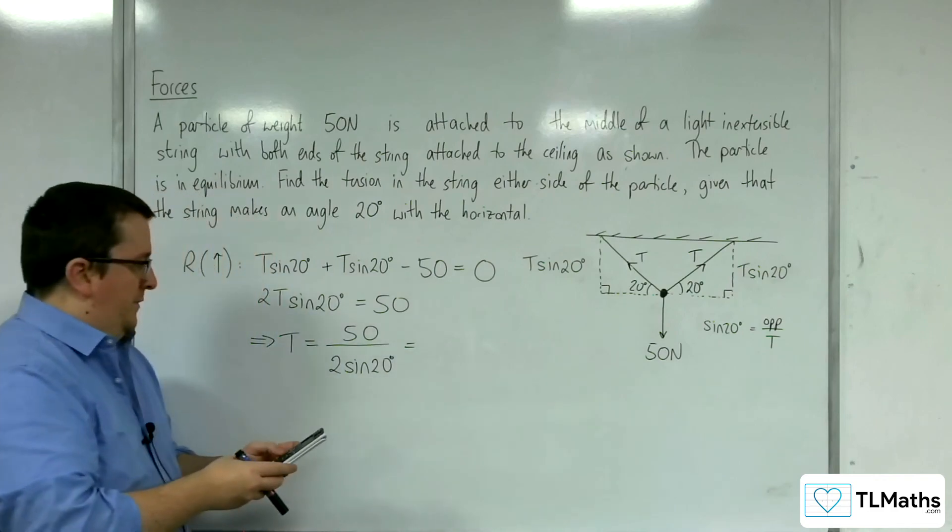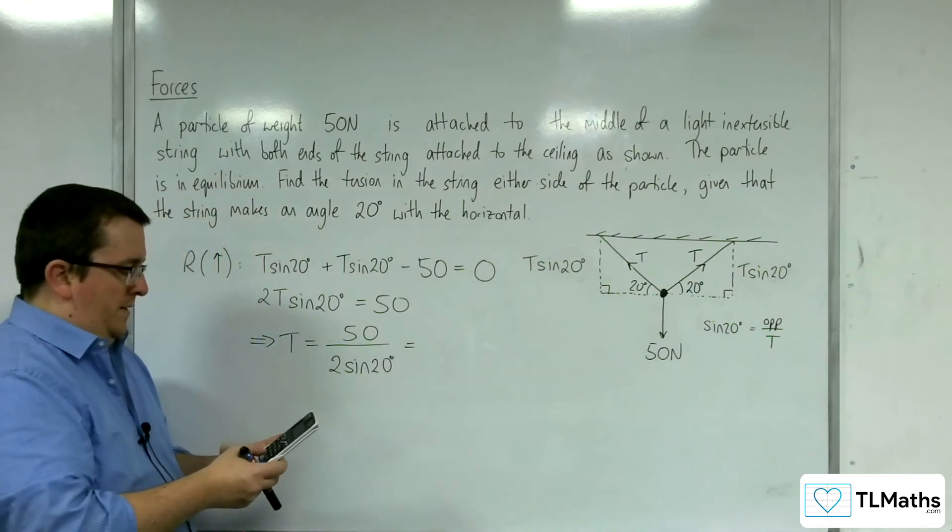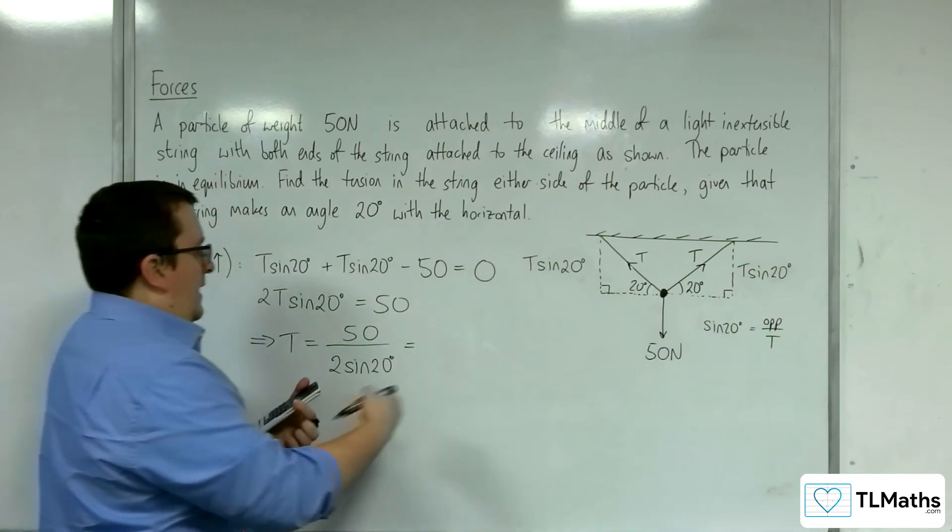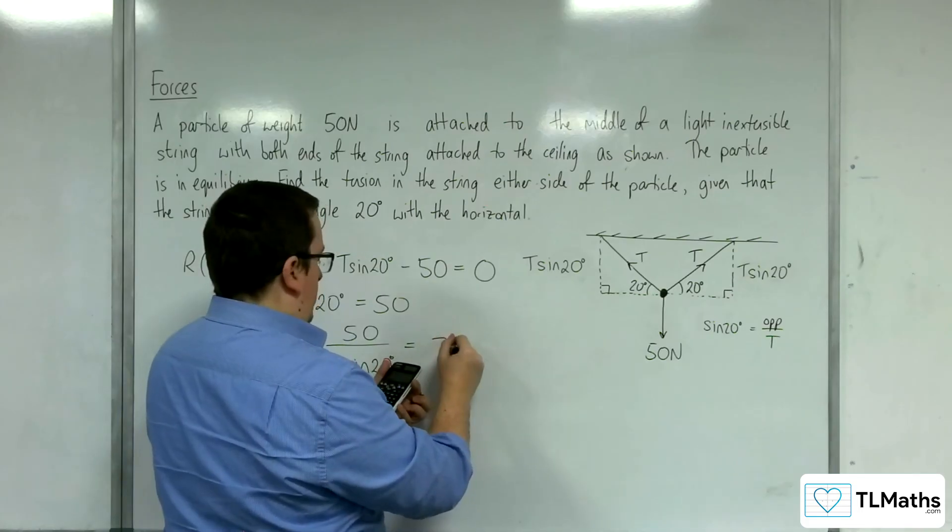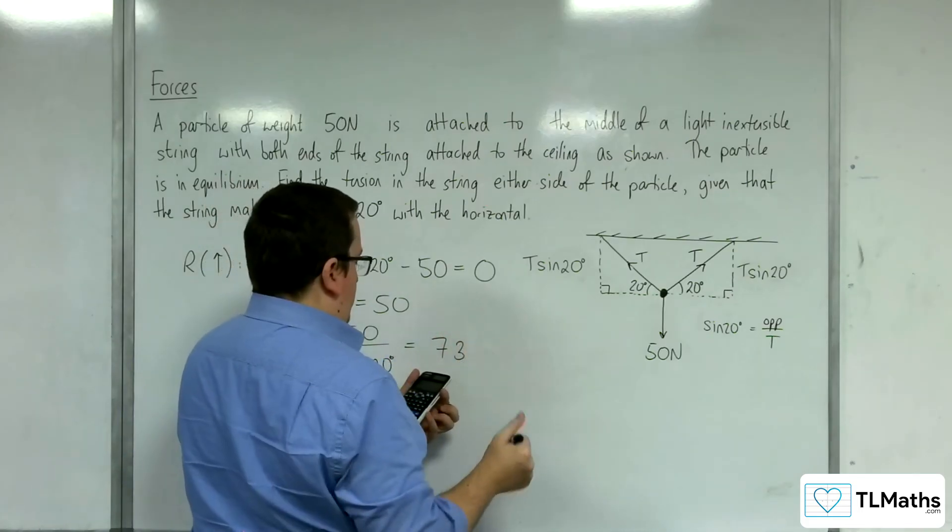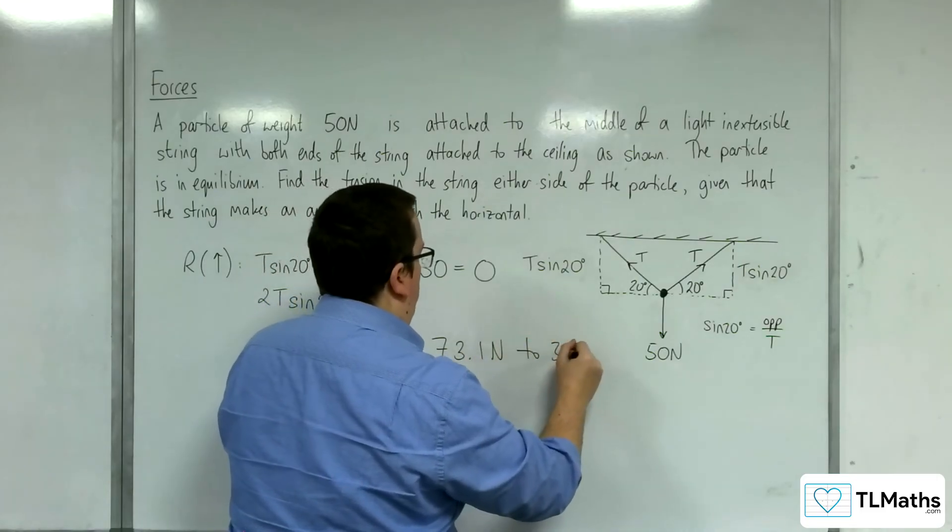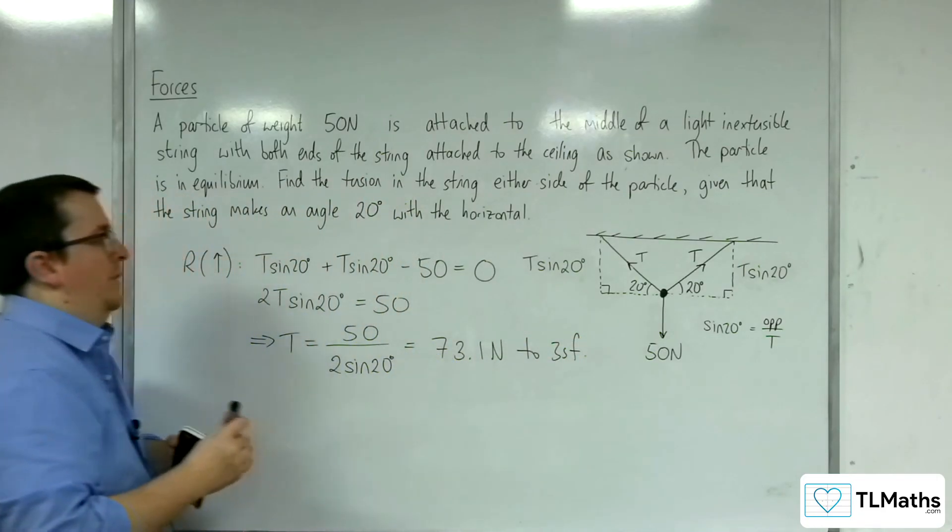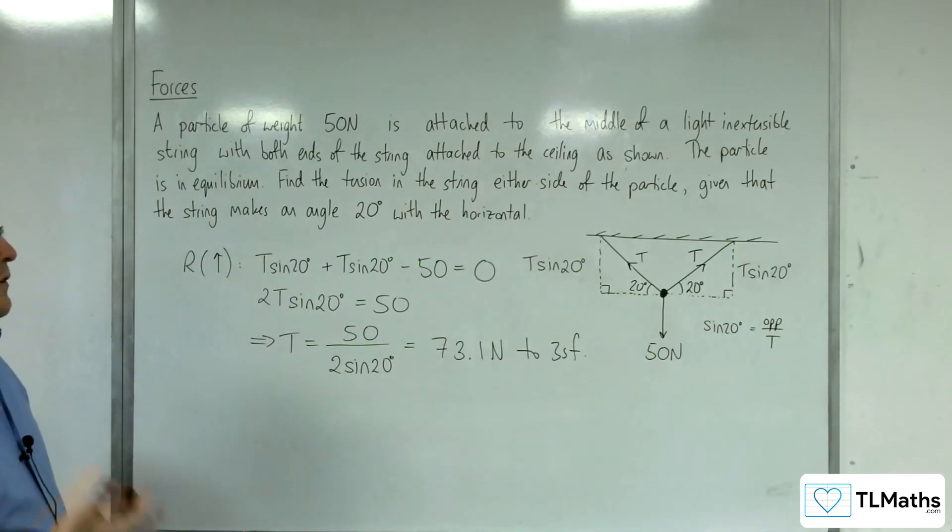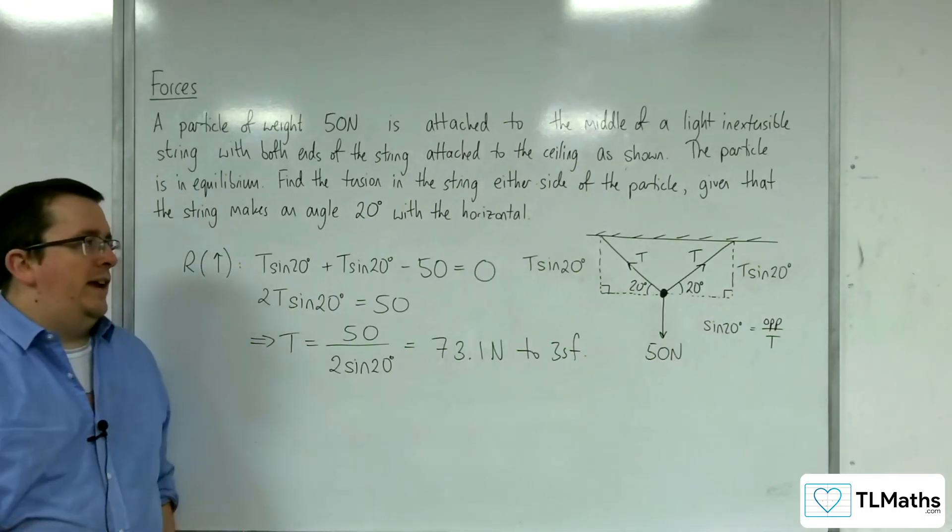50 divided by 2 times sine 20. And that gets me 73.1 newtons to 3 significant figures. And so that's how we can find out the tension in the string.